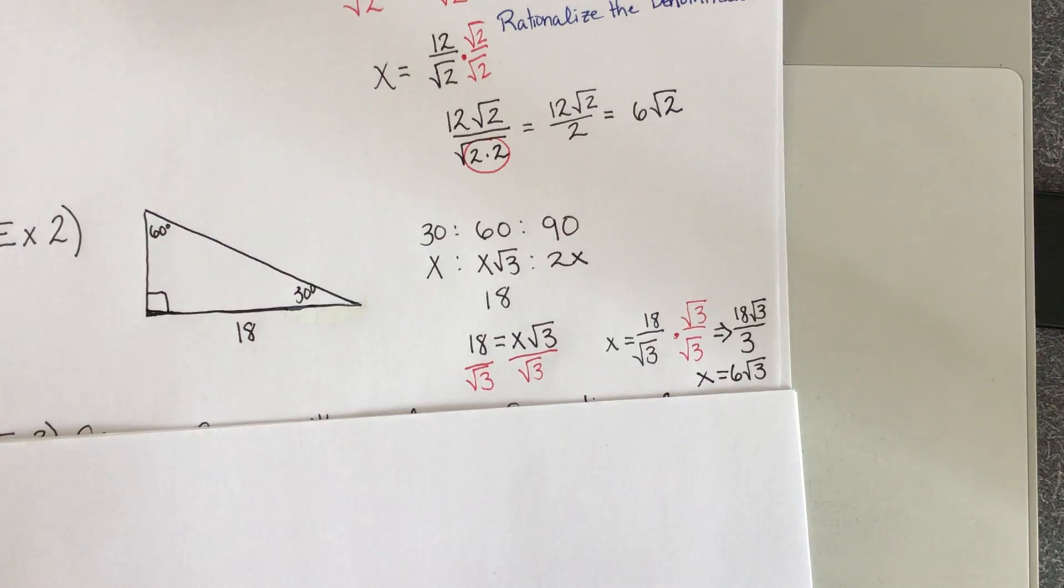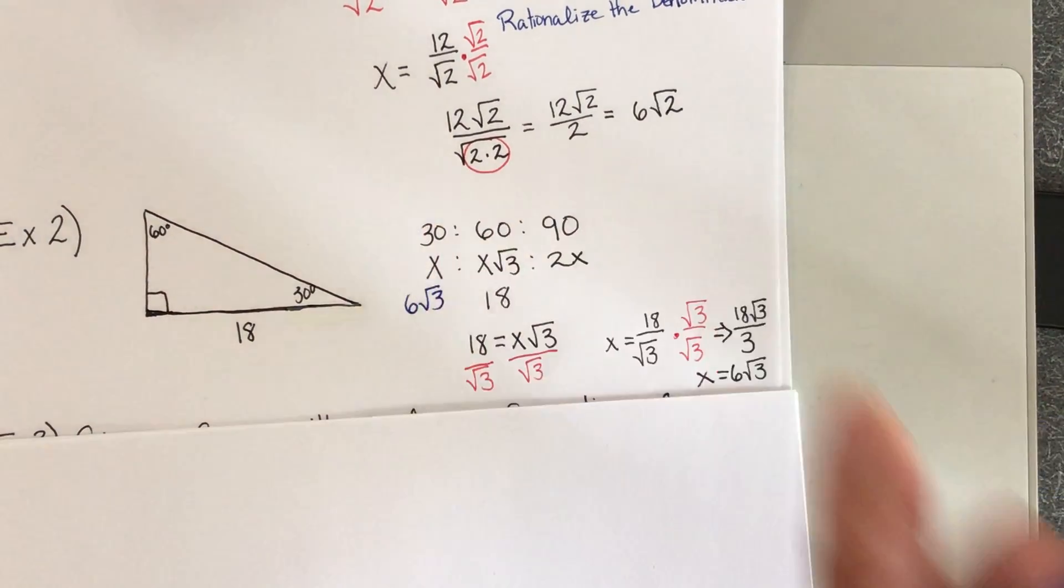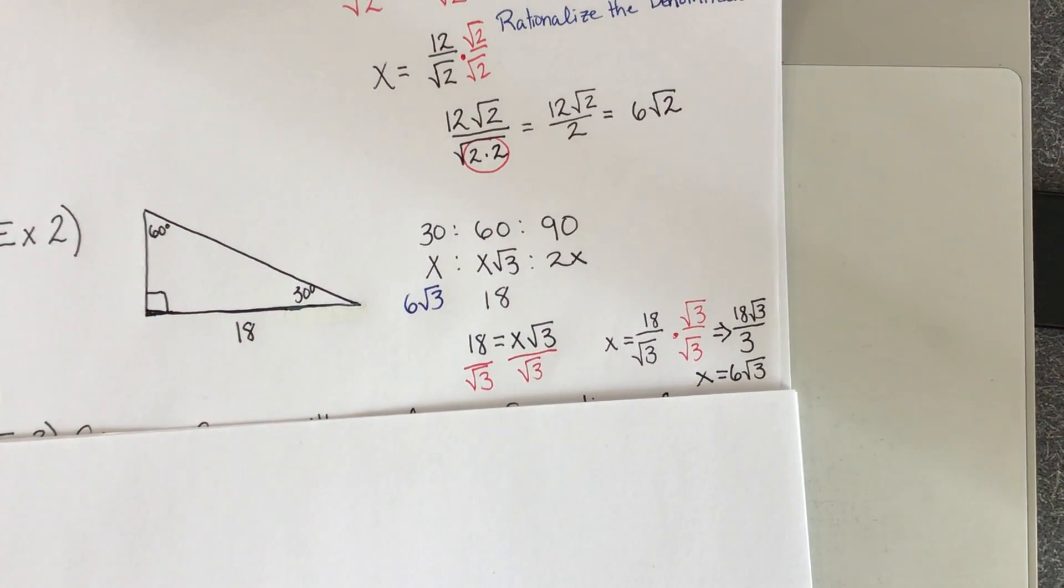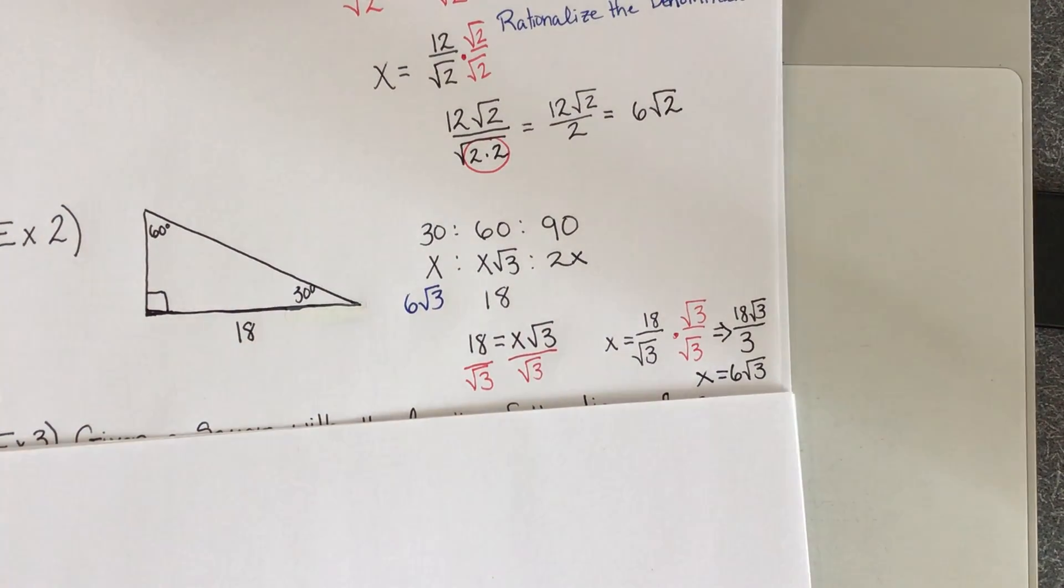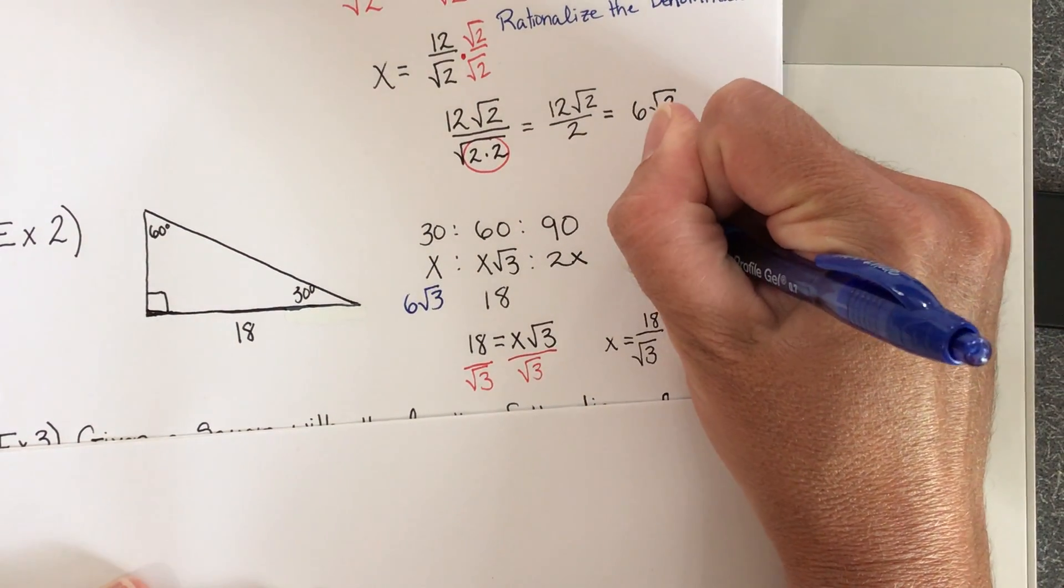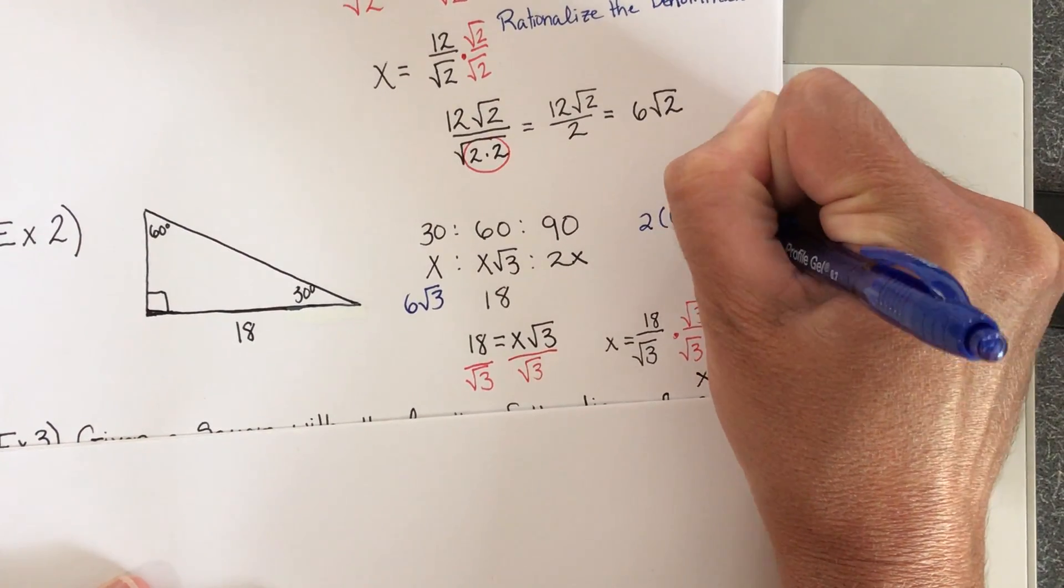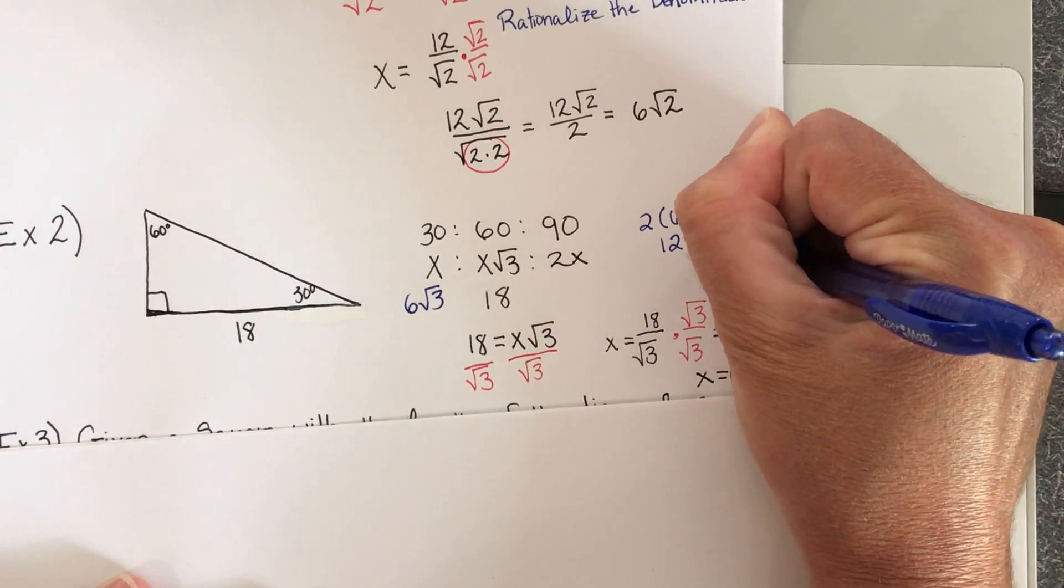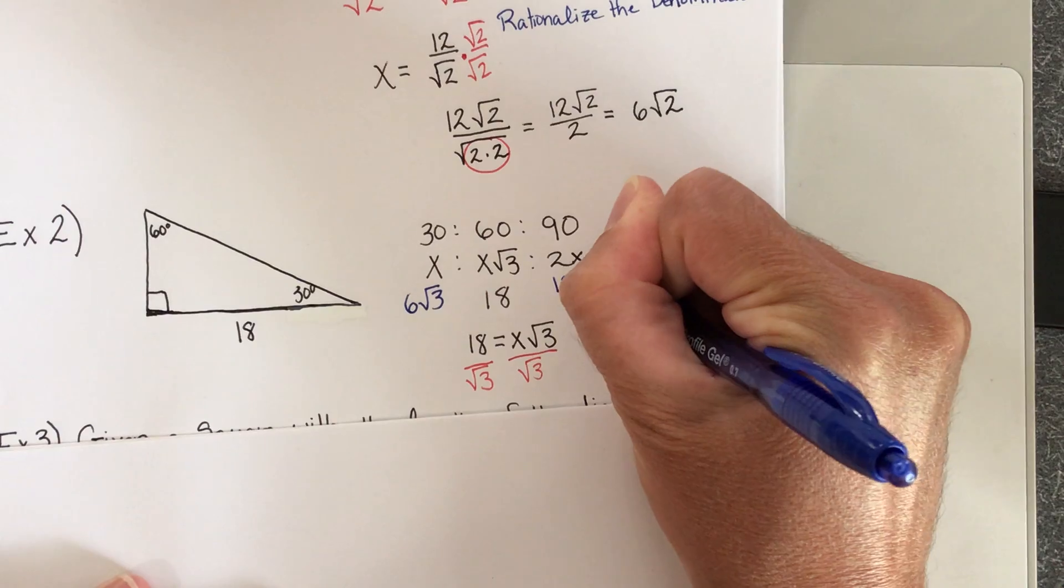So now I know what x is. So 6 times the square root of 3 goes here. And so now, to figure out the length of the hypotenuse, we're going to double this. So 2 times 6 times the square root of 3. Doubling that gives me 12 times the square root of 3. So the length of my hypotenuse is 12 times the square root of 3.